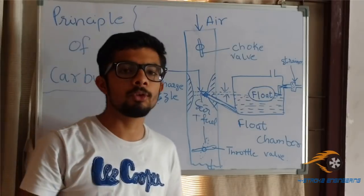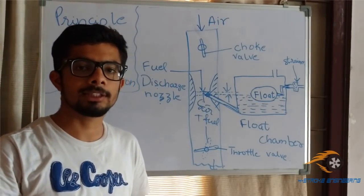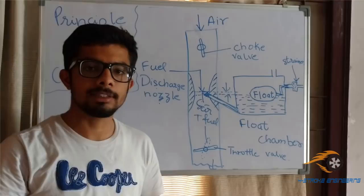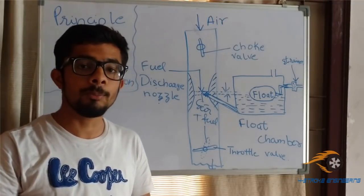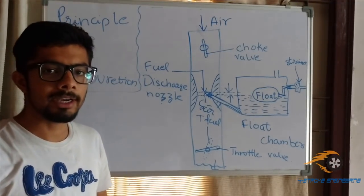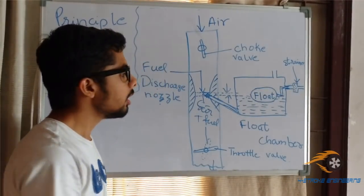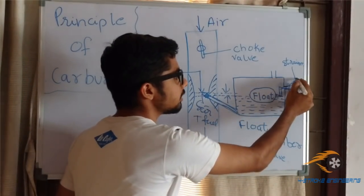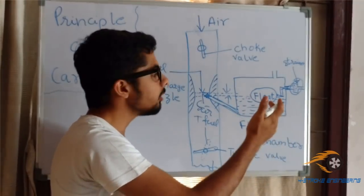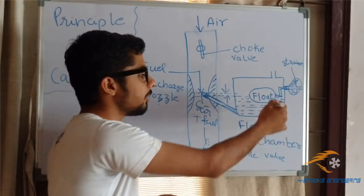You must have noted that when we go for servicing our bikes, the servicemen tells us that there are some dust particles or impurities in the fuel. Why does it happen? Due to the malfunctioning of strainer. The function of strainer is to purify and filter out the fuel that is coming to the float chamber.